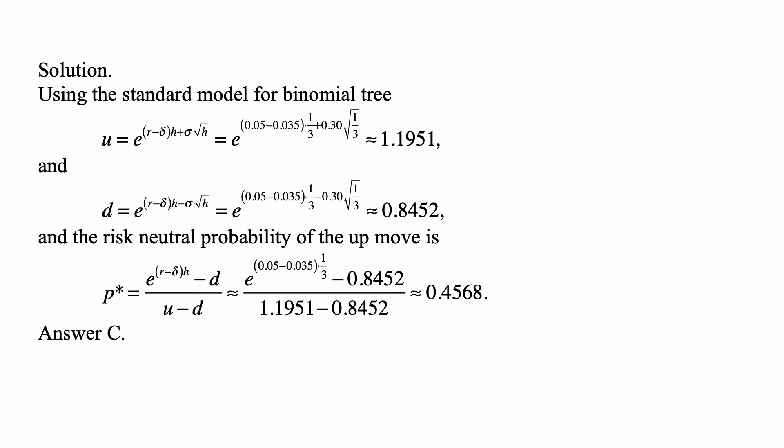We use the standard model for the binomial tree as presented in the McDonald book. The up move from $1 invested in the risky security is u = e^((r − δ)h + σ√h), where r is the risk-free interest rate, δ is the continuously compounded dividend yield, h is the length of a period, and σ is volatility. In this case, that is e^((0.05 − 0.035)(1/3) + 0.30√(1/3)), since the period length is four months (one-third of a year). This gives approximately u ≈ 1.1951.